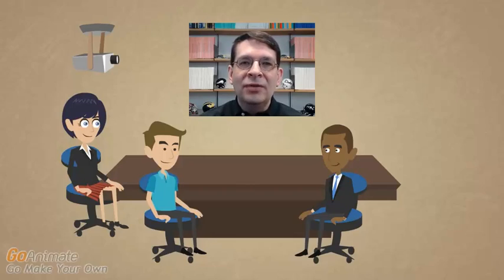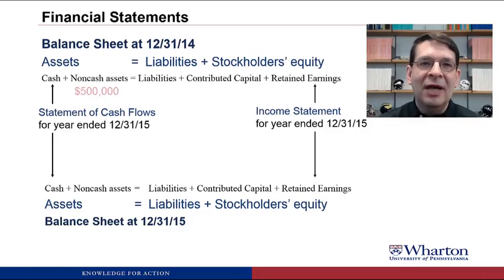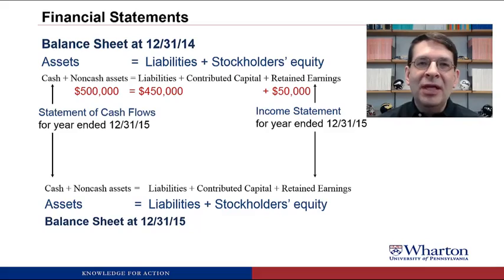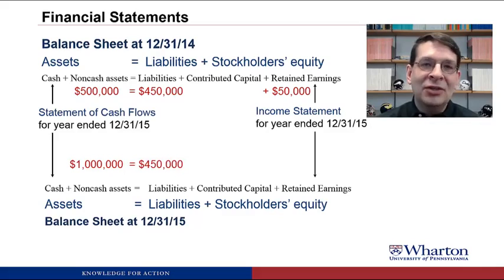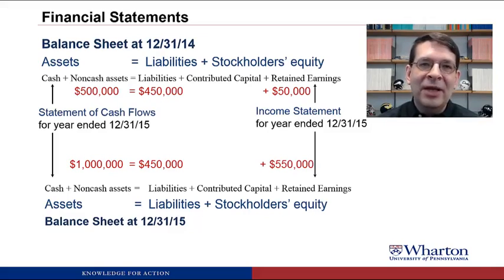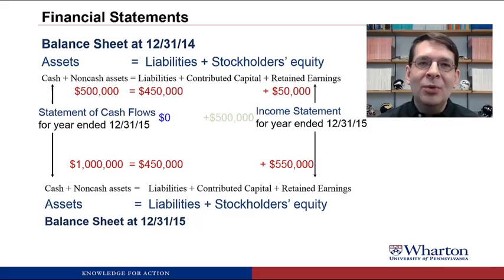Going back to the house example: on your first balance sheet you have a $500,000 house as your asset, a $450,000 mortgage as your liability, and $50,000 of equity. During the year, the value of your house increases to a million dollars. If you write up the value, your end-of-year balance sheet would show a million dollar asset, $450,000 of liabilities — the mortgage doesn't change — but your equity would go up from $50,000 to $550,000. None of this affects the cash flow statement, but your income statement would show a gain of $500,000 from the increase in your equity claim on the house.